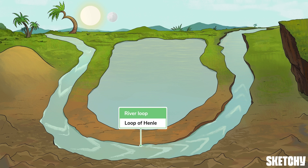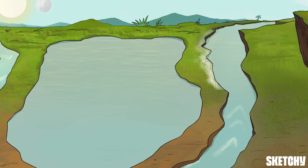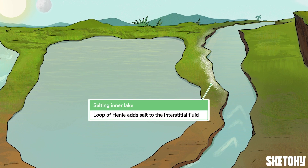The key player behind the corticopapillary gradient is the loop of Henle, cleverly depicted by this looping U-shaped river. The loop of Henle is found within the renal medulla, serving as a conduit for fluid to flow from more proximal parts of the renal tubule to more distal parts. But it doesn't just passively let fluid move through it — the loop of Henle actively adds sodium chloride to the interstitial fluid, a key step in the process of countercurrent multiplication.